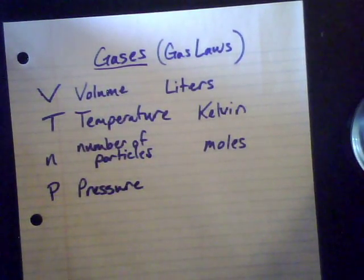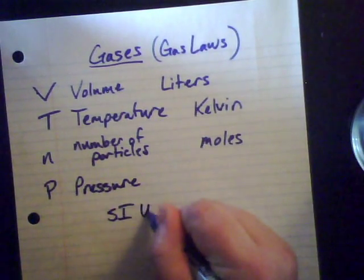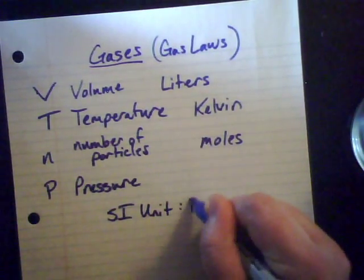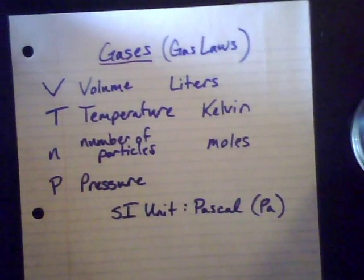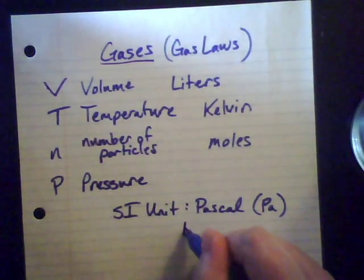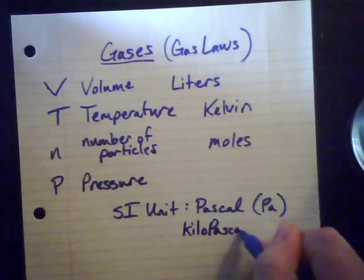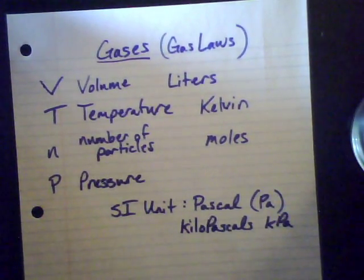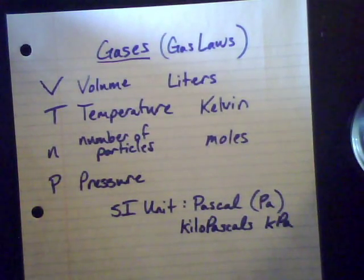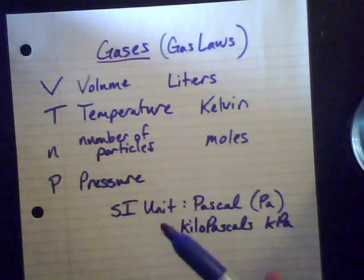Pressure's SI unit is the pascal, abbreviated Pa. More often than not, you see it measured in kilopascals, which is kPa. How many pascals are in a kilopascal? That's right — it's a thousand. So there's a thousand pascals in a kilopascal, and that is one of the measurements we'll see pressure in.